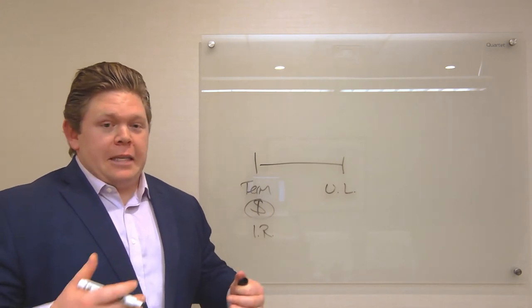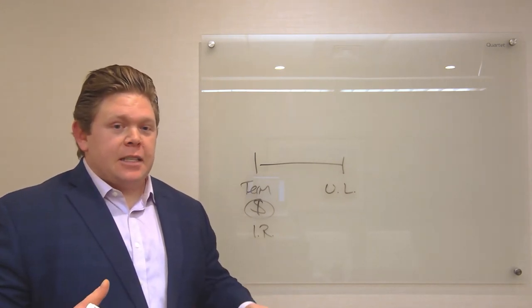You can have indexed universal life, variable universal life, guaranteed universal life, first to die, second to die, so on and so forth. Slow down.